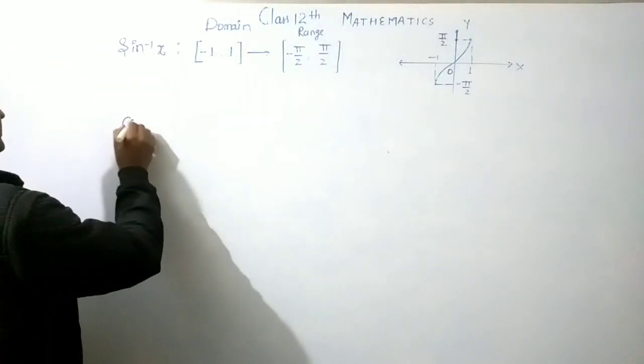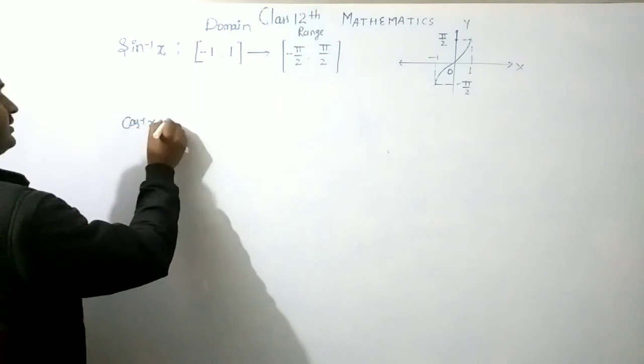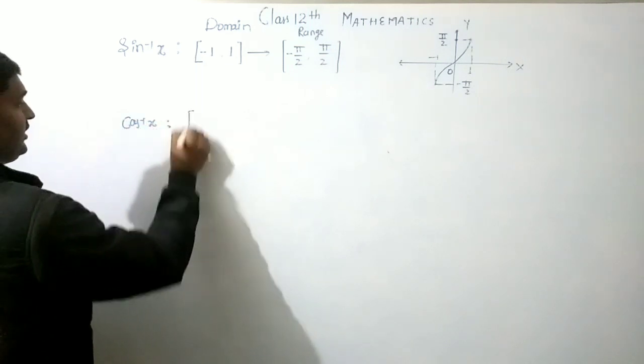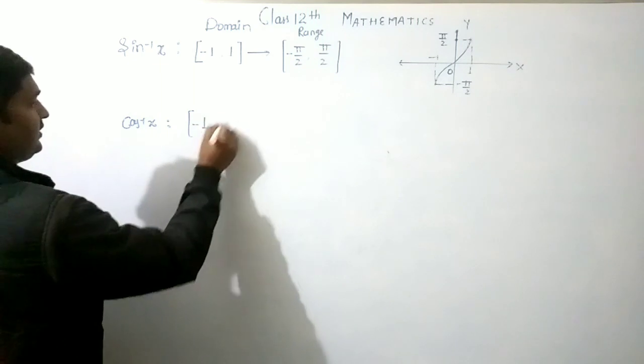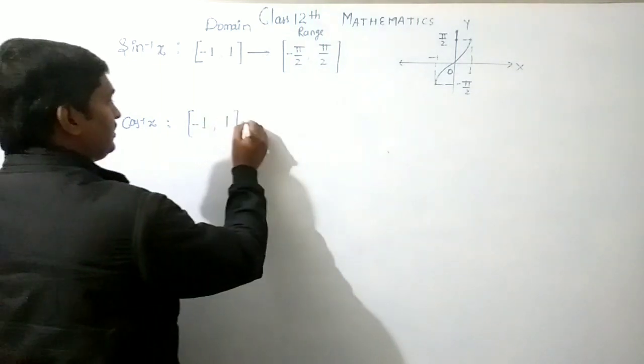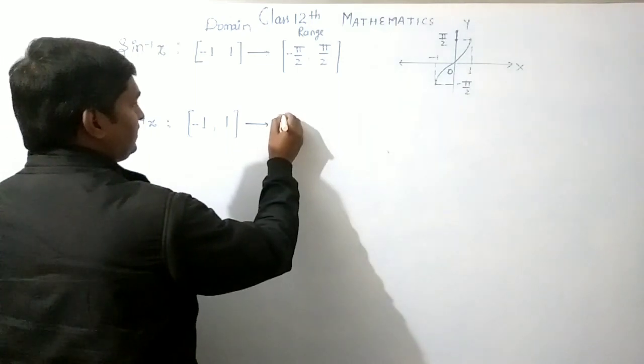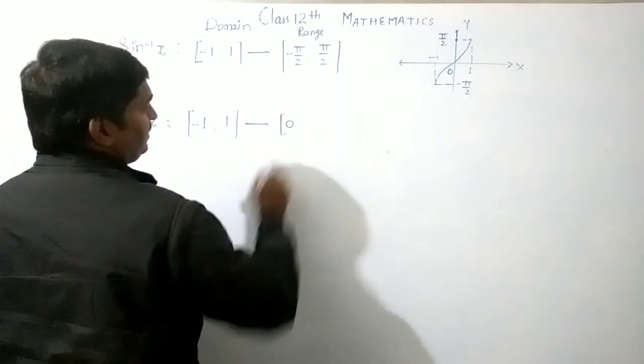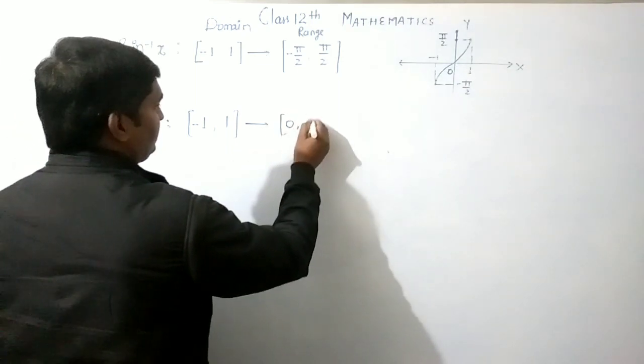Next, cos inverse x. Domain: closed interval [-1, 1]. Range: closed interval [0, π].